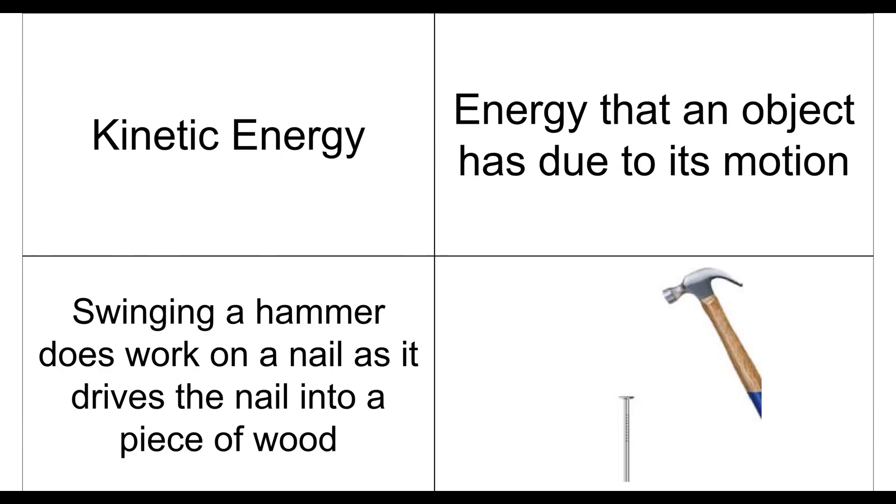Our next word is going to be kinetic energy. So we just kind of defined what energy is, and now we can define energy in two categories. The first one being kinetic energy. So kinetic energy is energy that an object has due to its motion. So if there's an object that's moving, it's going to have kinetic energy. If it's not moving, it won't have kinetic energy, and it's really that simple.